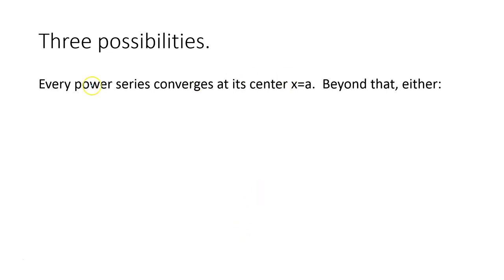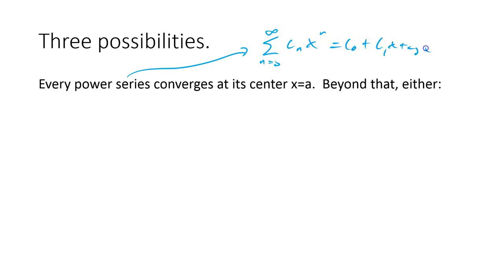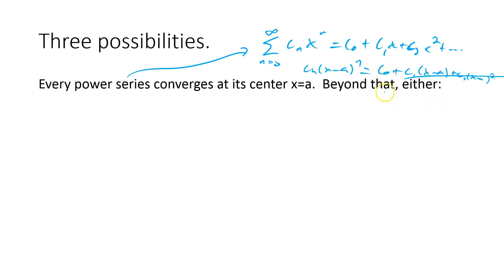What we're going to do is learn that there are three possibilities for every power series. Remember, a power series is just the sum from n equals 0 to infinity of c_n times x^n. So for every n we have an exponent on an x — some of the c_n's might be 0 — but we have c_0, c_1·x, c_2·x², and these c's can be anything as long as the x's are increasing in power. Every power series will converge at the center. If it's centered at a, so (x minus a)^n, when you plug in a, everything goes away except the first term c_0. So we know for sure it converges at the center.